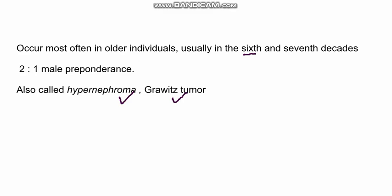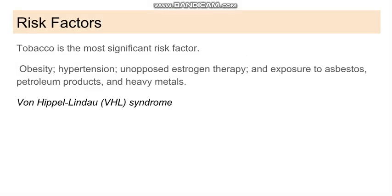In this video we will discuss about the types of tumour, the risk factors, and the morphology of RCC. One of the most important risk factors is tobacco smoking. Others are obesity, hypertension, unopposed estrogen therapy especially in females, then exposure to asbestos, petroleum products, and heavy metals.